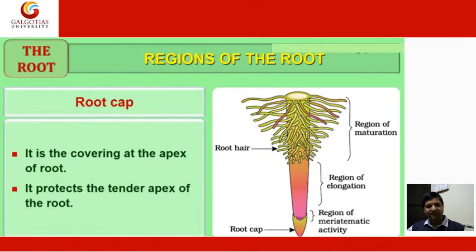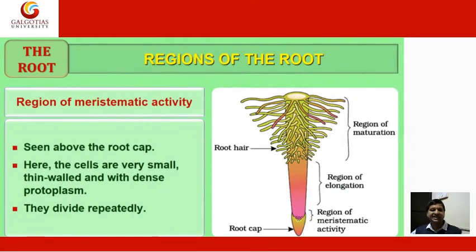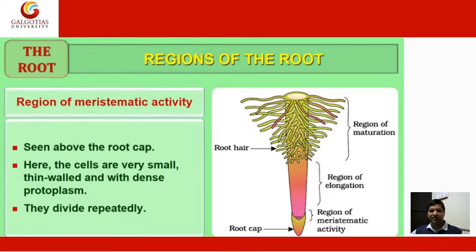The root cap is the covering at the apex of the root; it protects the tender apex. The region of meristematic activity is seen just above the root cap. Here, cells are very small, thin-walled, and with dense protoplasm; they divide repeatedly.